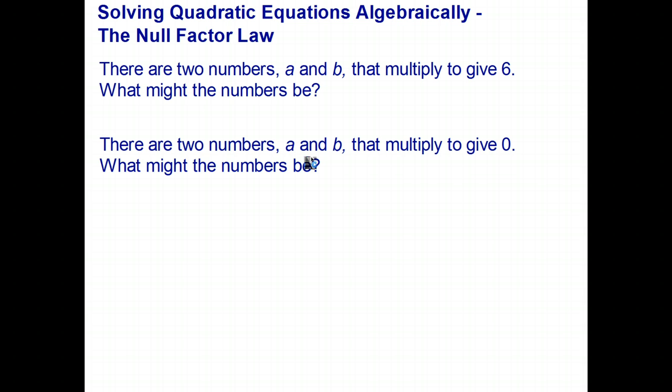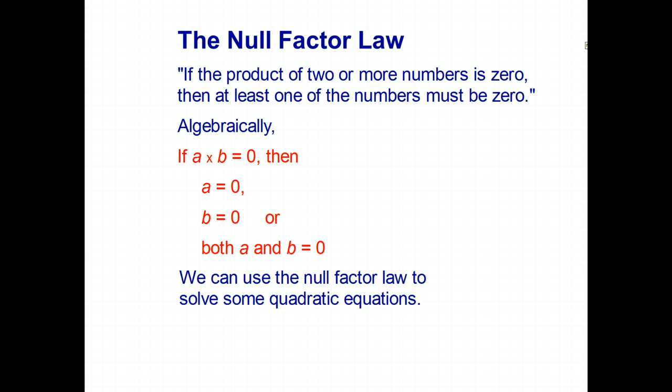Now it gets a bit more interesting when you look at this question. There are two numbers a and b that multiply to give zero. What might the numbers be? So again, you might think that there's a lot of choices here, but it turns out when you think about it, the only way you can multiply two numbers and get zero as the answer is if one of the numbers is zero, and the other number then can be anything. So if two numbers multiply to give zero, one of the numbers has to be zero, or of course they could both be zero, and that effectively is the null factor law.